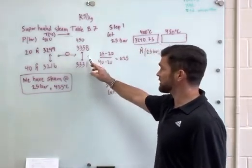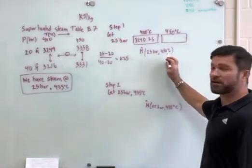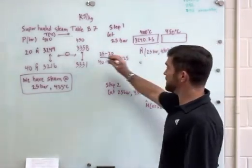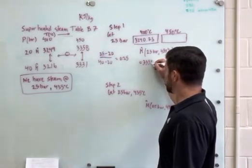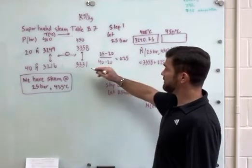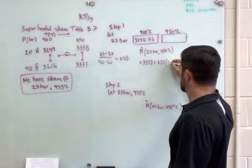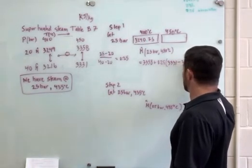And I already did that, so I'll do it for this value. So for here, this enthalpy at 25 bar and 450 degrees C, it's just going to be this first value at the lower pressure, 3358 plus 0.25, so 25% of the difference of this value minus this value. So 3331 minus 3358.